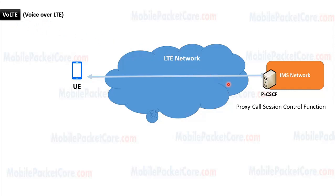The first node in IMS network that the UE connects to is called PCSCF, which refers to Proxy Call Session Control Function. The UE and the IMS network will exchange signaling messages in order to establish or release voice calls. The signaling messages between the UE and the IMS network is done using a protocol called SIP protocol.